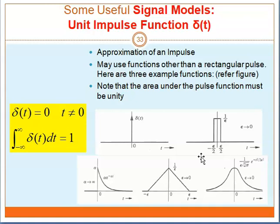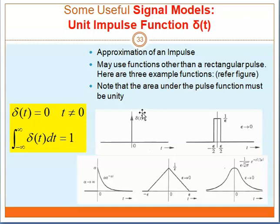Next, we have the unit impulse function, denoted by delta(T). It is actually an approximation of an impulse. Note that the area under the pulse function must be unity. The unit impulse function is denoted by this symbol, delta(T), shown with an arrow. The area under the pulse function is 1, unity.